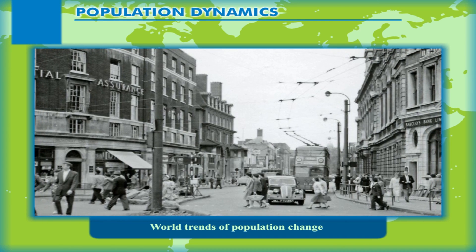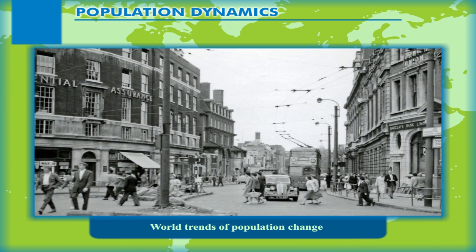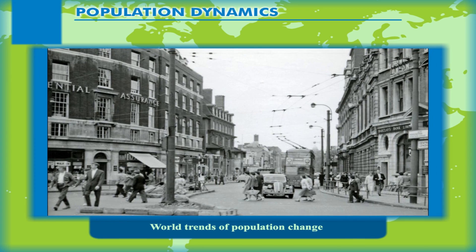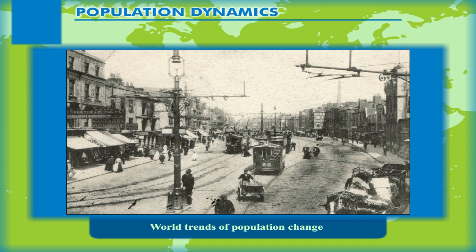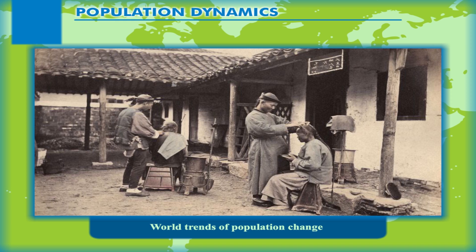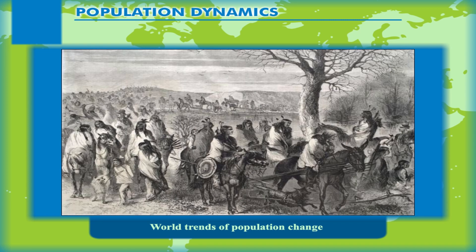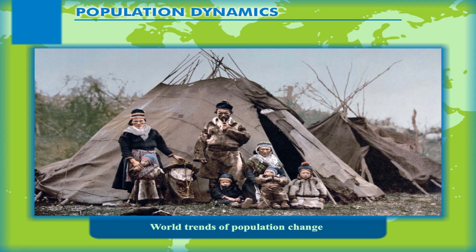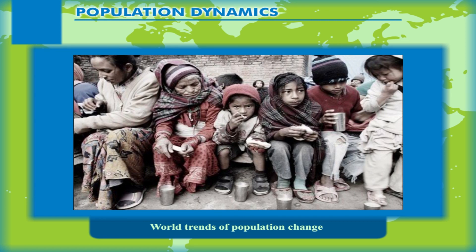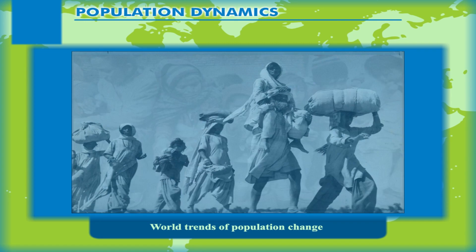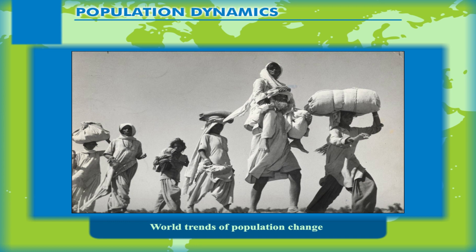World Trends of Population Change. The growth of population is very dramatic, in the sense that in the late 19th century, there were about a billion people living on the earth. But by the end of the 20th century, it had reached the 6 billion mark. We can safely assume that natural resources have to be stretched far beyond their capacity to take care of the needs of such a large number of people. During the early periods of human history, the growth of population was very slow and people were leading a nomadic life. Scarcity of food and spread of diseases were the main causes of slow growth.